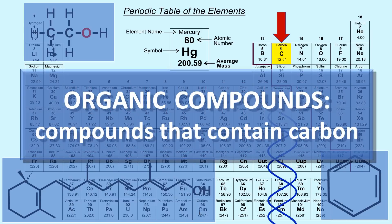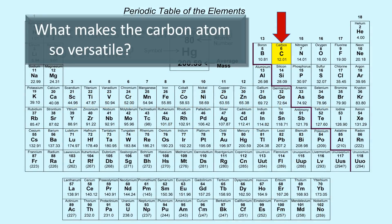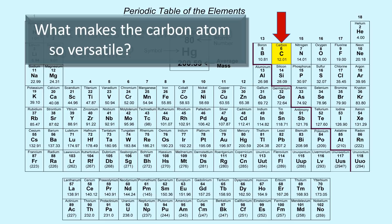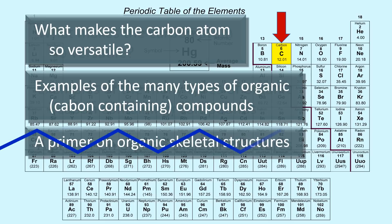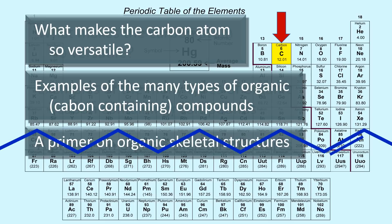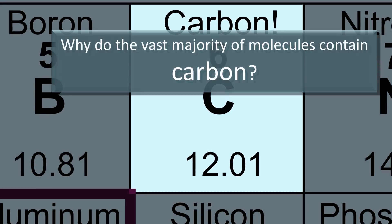Something extremely important to remember is that we call compounds that contain carbon organic compounds. In this video, we will see what makes the carbon atom so versatile, examples of the many types of organic compounds, a primer on organic skeletal structures, and a bit of organic naming — all of which will answer our overarching question: why do the vast majority of molecules on Earth contain carbon?